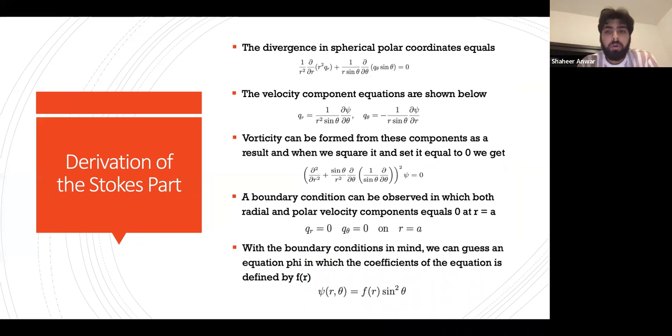Vorticity can be formed from these components as a result, and when we square it and set it equal to zero, we get the following equation. A boundary condition, also known as a no-slip condition, can be observed in which both radial and polar velocity components equal zero at r = a.